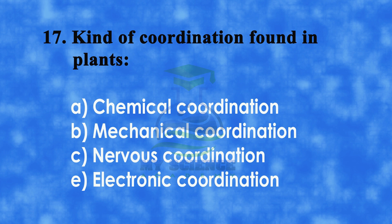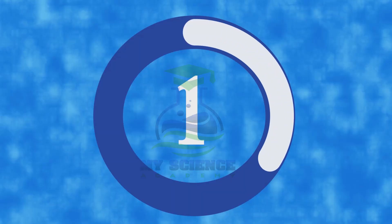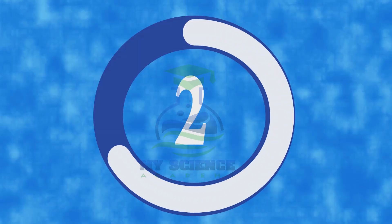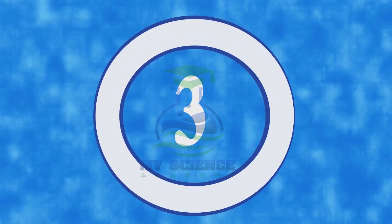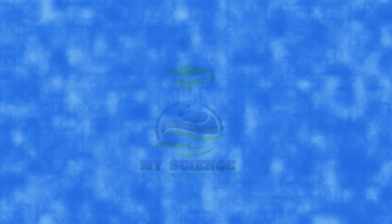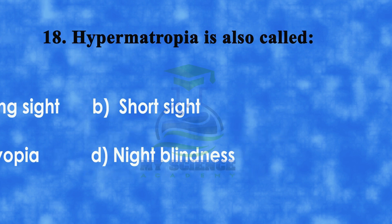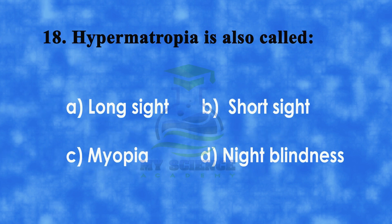Number 17: Kind of coordination found in plants. A: chemical coordination, B: mechanical coordination, C: nervous coordination, or D: electronic coordination. And correct answer is A: chemical coordination.